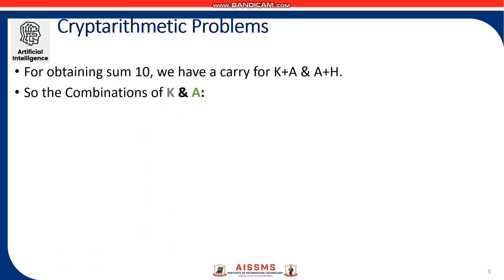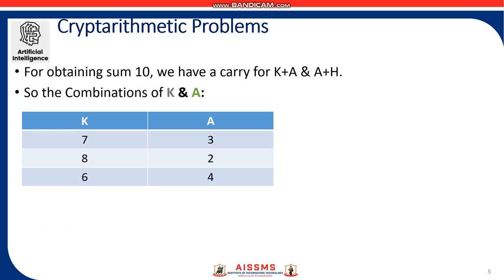So the possible combinations of K and A are as shown in the table. K can be 7, A is 3; second combination K is 8, A is 2; the third combination K is 6, A is 4.